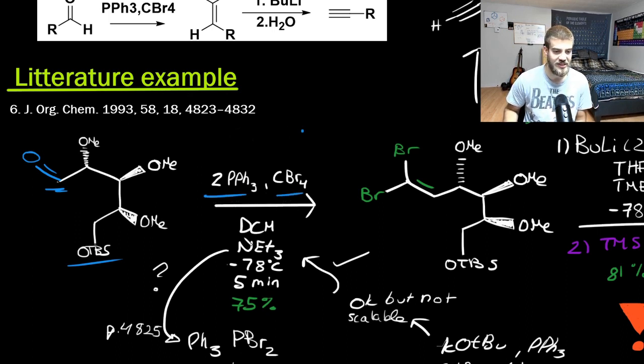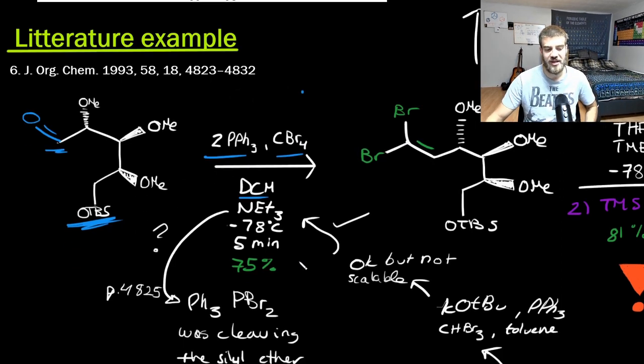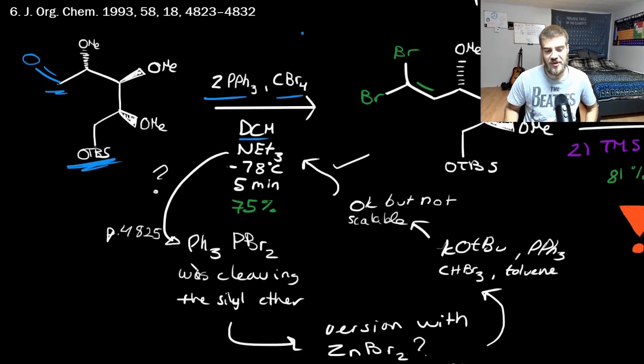They want to do the Corey-Fuchs on it. So their first attempt was to do it normally within DCM with the two equivalents of triphenylphosphine and one of carbon tetrabromide. And it ended up not working too well, because they cleaved their protected alcohol there, their xylyl ether. And their hypothesis was that, remember in the second part of the mechanism, I said you'd waste, or you'd get this side product, and you wanted to waste it somehow.